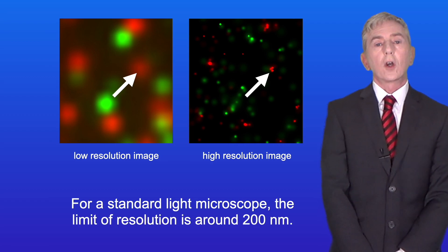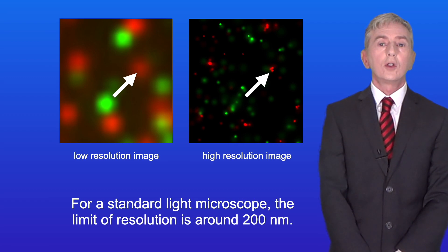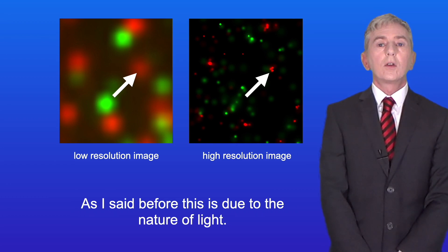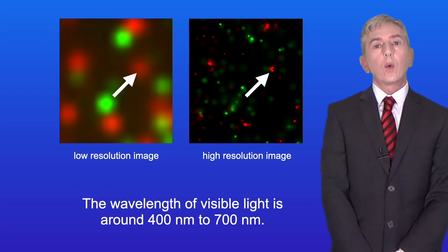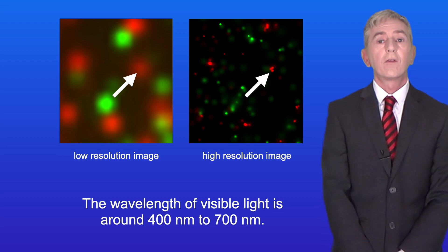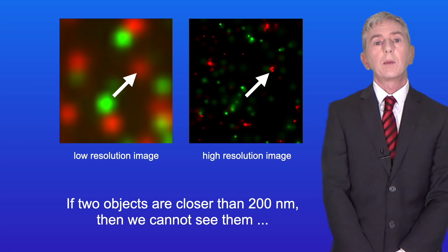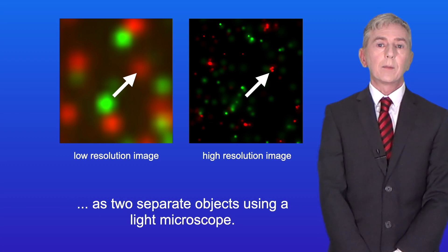For a standard light microscope the limit of resolution is around 200 nanometers. As I said before this is due to the nature of light. The wavelength of visible light is around 400 nanometers to 700 nanometers. If two objects are closer than 200 nanometers then we cannot see them as two separate objects using a light microscope.